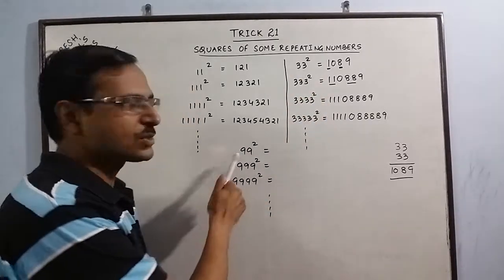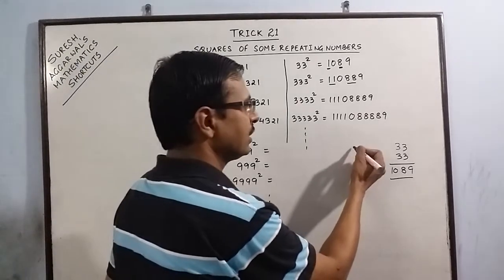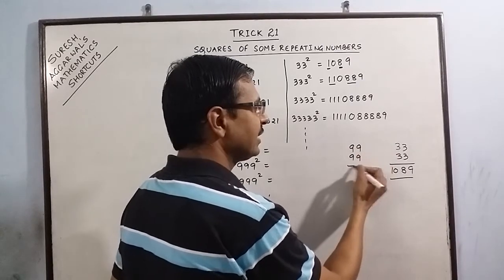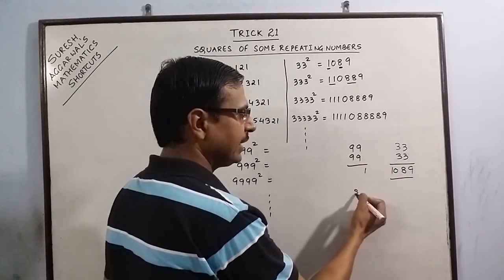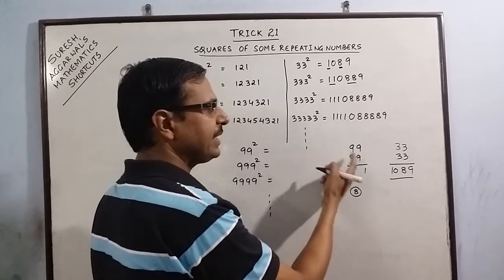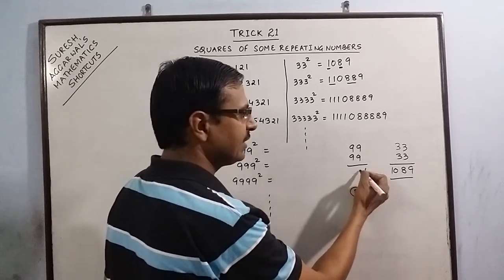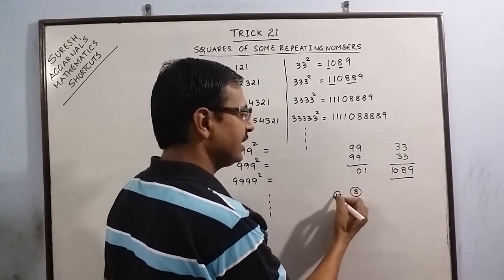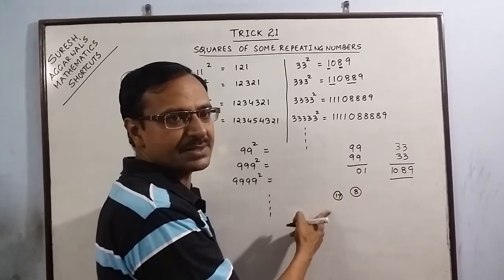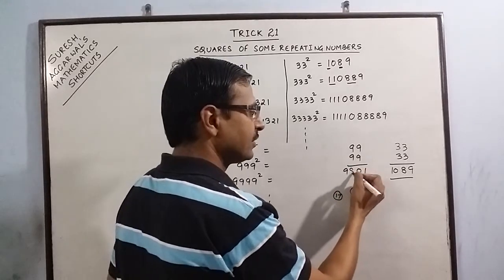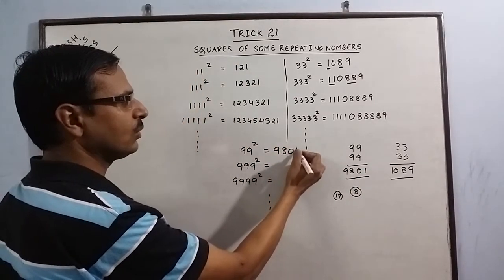First of all, we have to find the square of 99, and for finding the square of 99, we use the vertically and crosswise technique. So 9 times 9 is 81, write 1 carry 8. 81 plus 81 is 162, plus 8 is 170, write 0 carry 17. 9 times 9 is 81, plus 17 is 98. So the square of 99 is 9801.